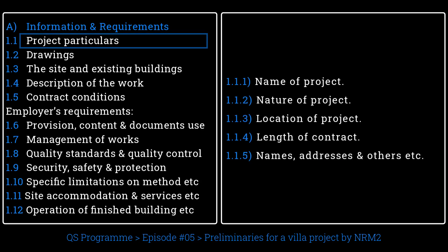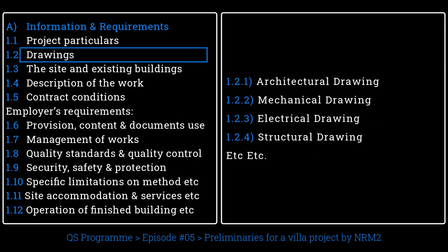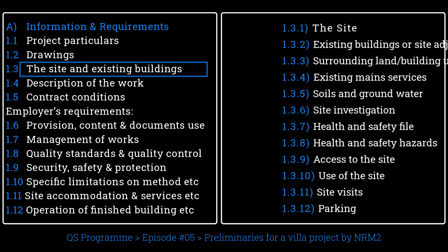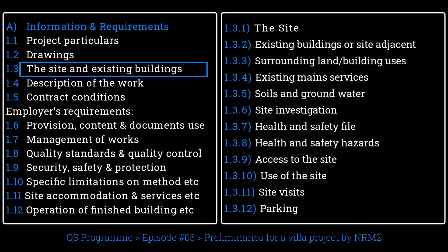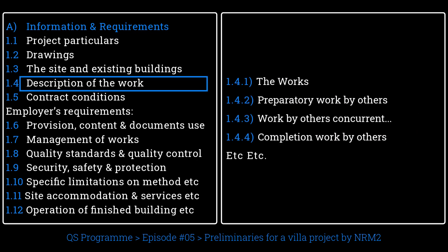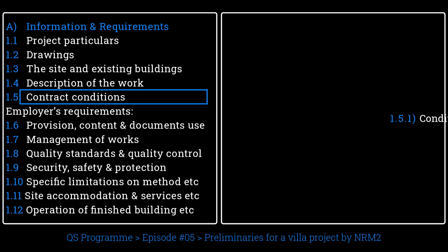In project particulars we need to state the details of a project like name, nature, location, and length of contract, etc. In drawings, we need to mention the drawing details: architecture, structure, mechanical, and other documents. For site and existing building, we need to describe the site area and provide a detailed description of the work.